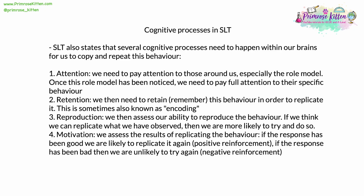The third is reproduction: we assess our ability to physically reproduce the behavior. If we think we can replicate it, we are more likely to try. If we see behavior we don't physically or mentally have the ability to replicate, we're much less likely to try. The fourth is motivation: we assess the results of trying to replicate the behavior. If the response has been positive or we've been rewarded, we're likely to replicate it again — positive reinforcement. If the response has been bad or we've received punishment, we are very unlikely to try again — negative reinforcement.